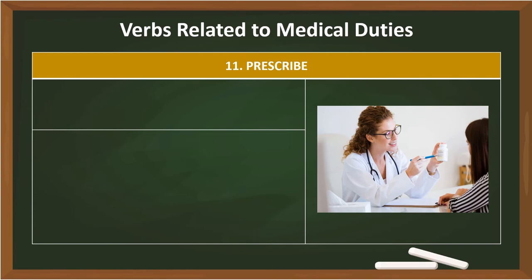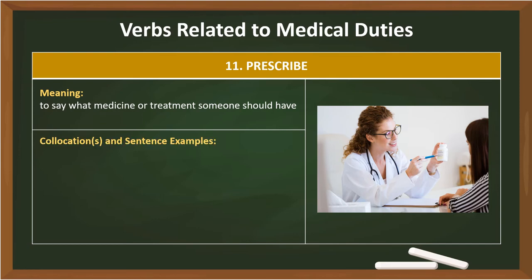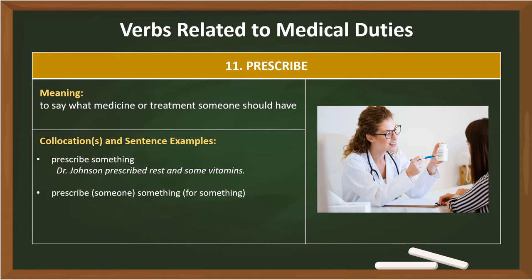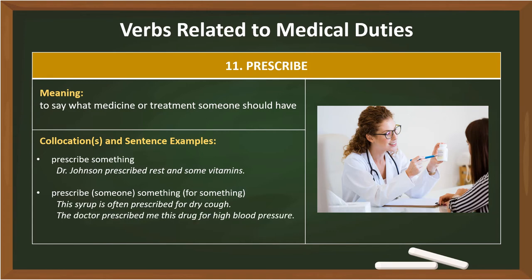11. Prescribe. Meaning: to say what medicine or treatment someone should have. Collocations: Prescribe something — Dr. Johnson prescribed rest and some vitamins. Prescribe someone something for something — This syrup is often prescribed for dry cough. The doctor prescribed me this drug for high blood pressure.